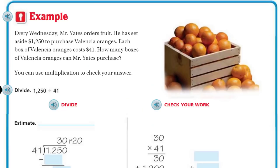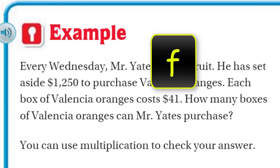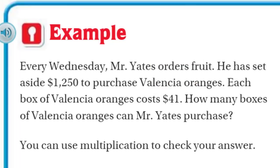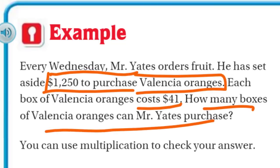Let's go to the next problem. Every Wednesday, Mr. Yates orders fruit. He has set aside $1,250 to purchase Valencia oranges — those must be good oranges! Each box of Valencia oranges costs $41 for one box. How many boxes of Valencia oranges can Mr. Yates purchase? I can see this is division because I have that first $1,250 — let's see how many boxes he can buy at $41 each. We know the size of each box and we need to know how many boxes there are.